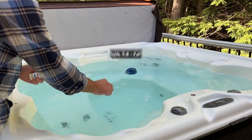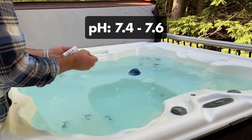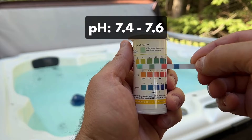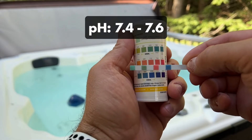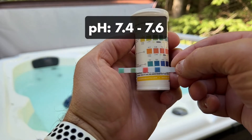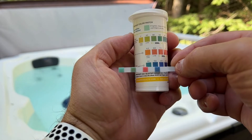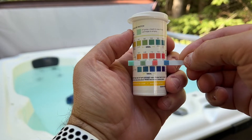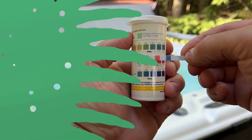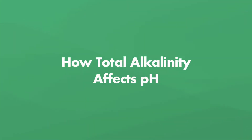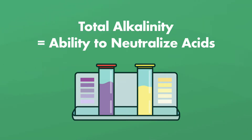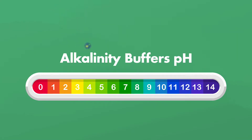Your pH should be between 7.4 and 7.6. By testing your water at least once a week, you'll know if your pH levels are too high or too low. That's also when you'll want to test your total alkalinity levels. Your total alkalinity measures your water's ability to neutralize acids — alkalinity acts as a buffer for your pH, preventing it from fluctuating wildly.